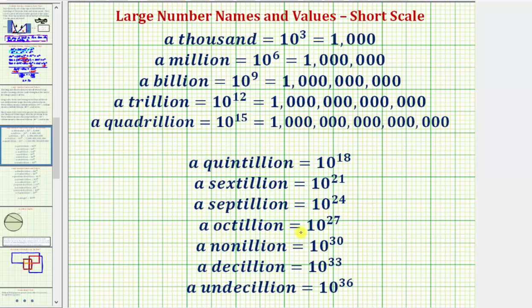An octillion is equal to 10 raised to the power of 27, or 10 to the 27th. A nonillion equals 10 to the 30th, or 10 raised to the power of 30. A decillion is equal to 10 raised to the power of 33. An undecillion is equal to 10 raised to the power of 36. Notice how each of these numbers, the exponent on 10 is increasing by three, which again indicates each number is a thousand times larger than the previous number.